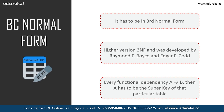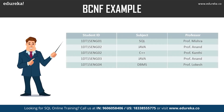In the example table, one student can enroll for multiple subjects, multiple professors can teach one subject, and for each subject a professor is assigned to a student. All normal forms are satisfied except Boyce-Codd normal form — student ID and subject form the primary key, making subject a prime attribute. However, professor depends on subject, and professor is a non-prime attribute depending on a prime attribute, which is not allowed by Boyce-Codd normal form.